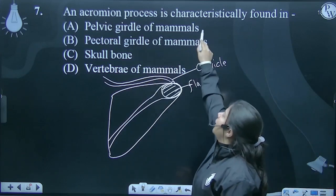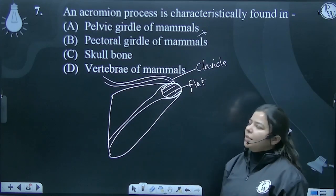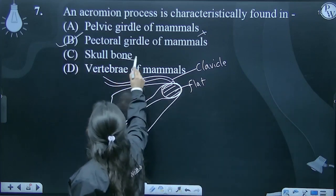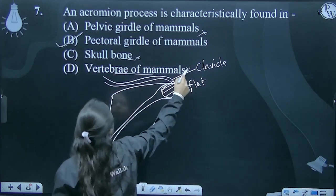First option, not pelvic girdle. This is your shoulder part. This is pectoral girdle of mammals, not skull bone and not vertebra of mammals.